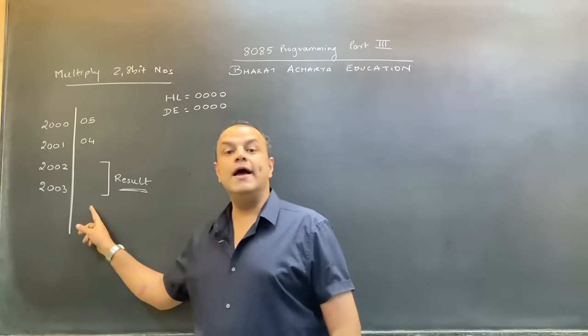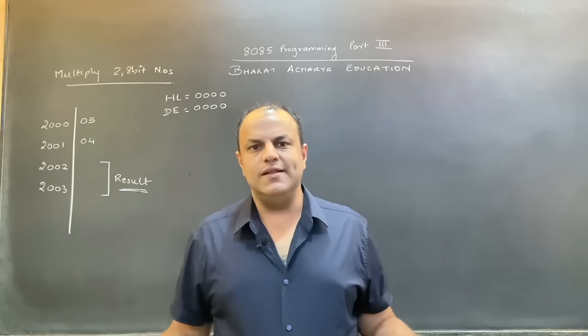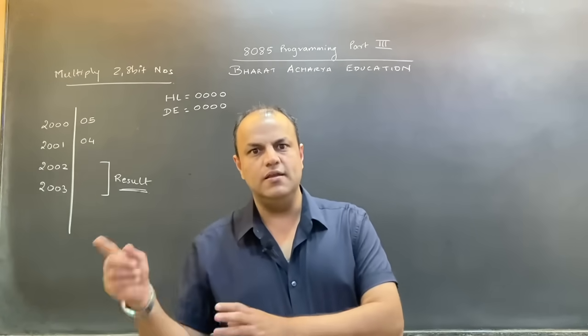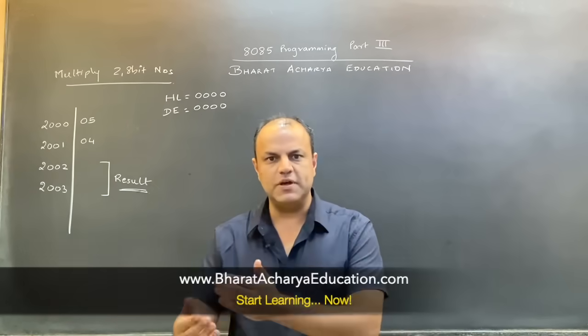How are you going to do it? Multiplication is nothing else but repeated additions. We're going to take one number, keep adding it the second number number of times. Five into four is basically five plus five plus five plus five, right?